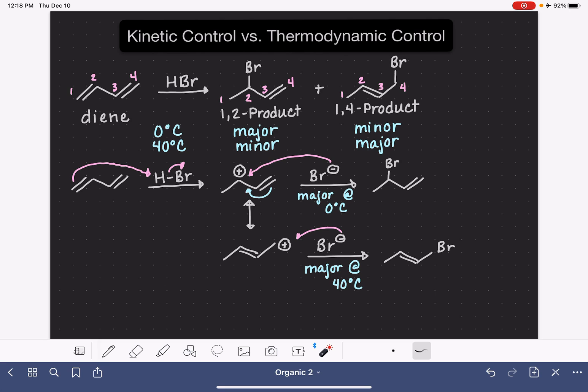So the motivation for rearranging in this step to form a less stable carbocation is really the end game here. If the carbocation can rearrange itself, it's going to be forming ultimately a more stable product.